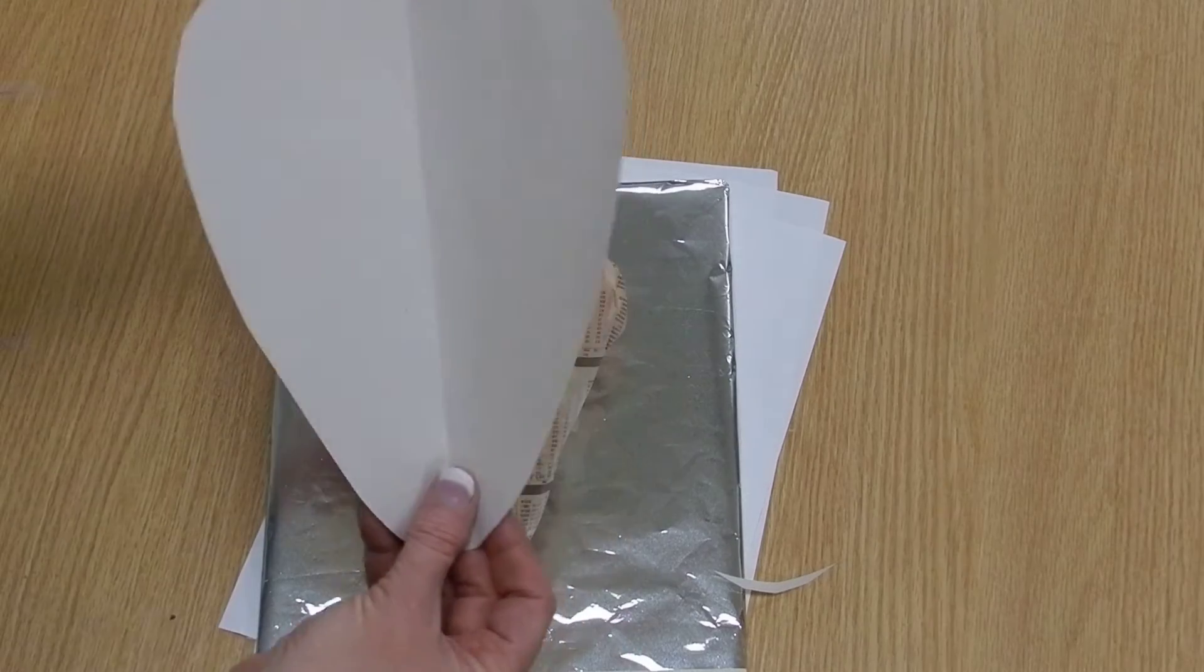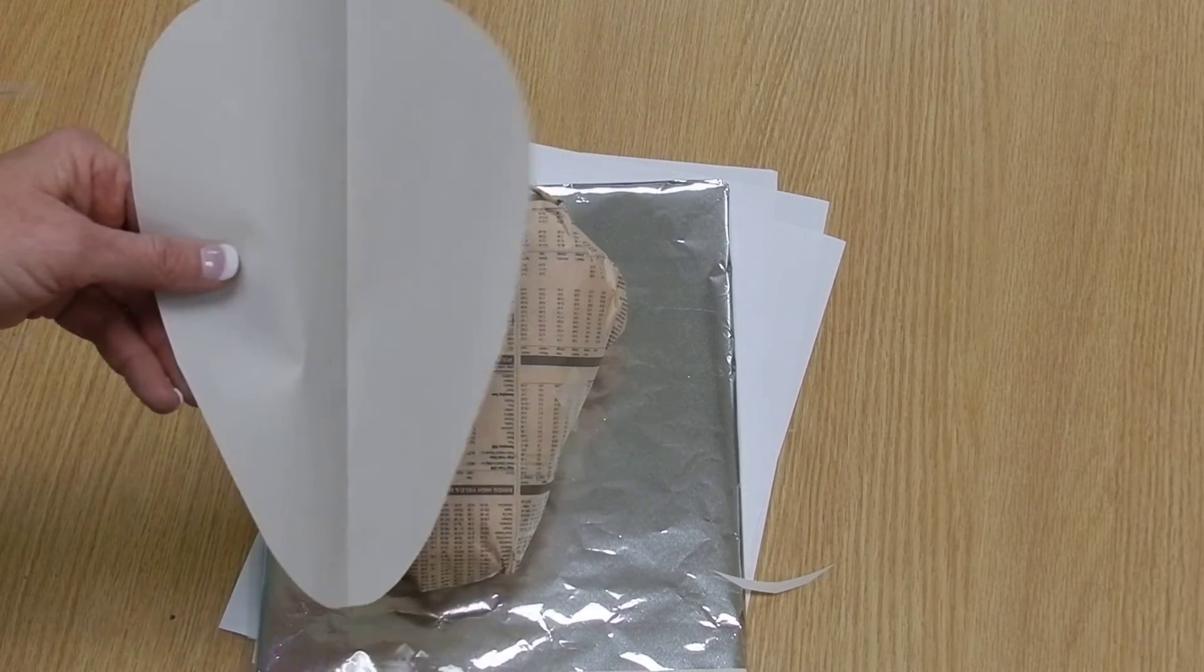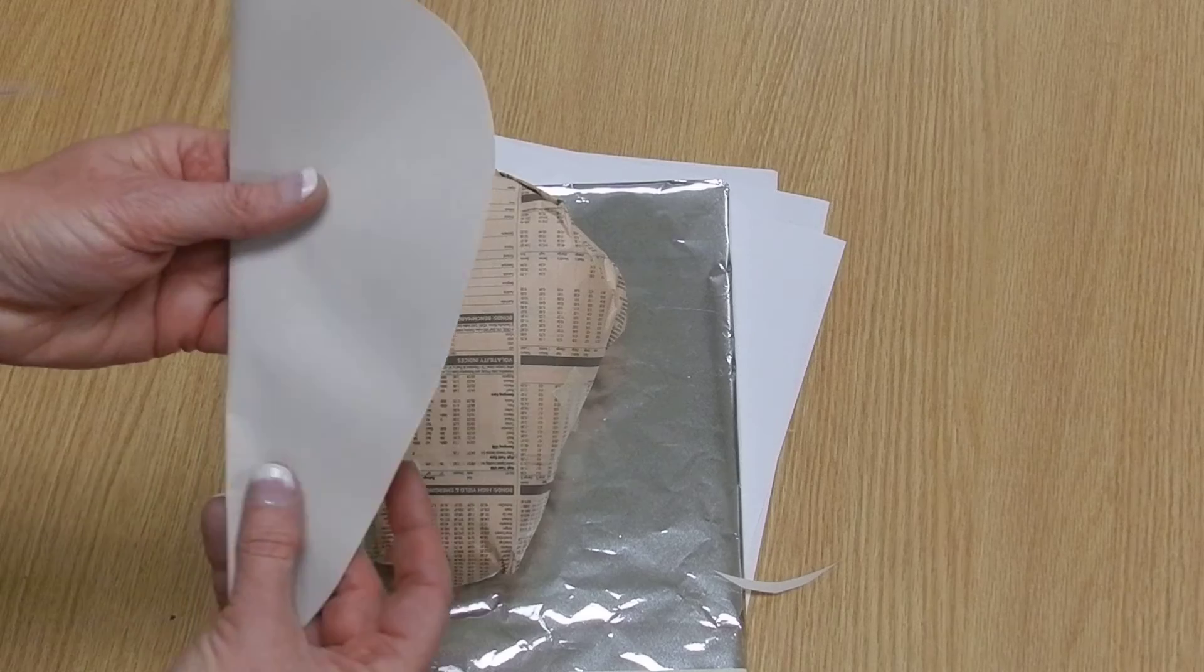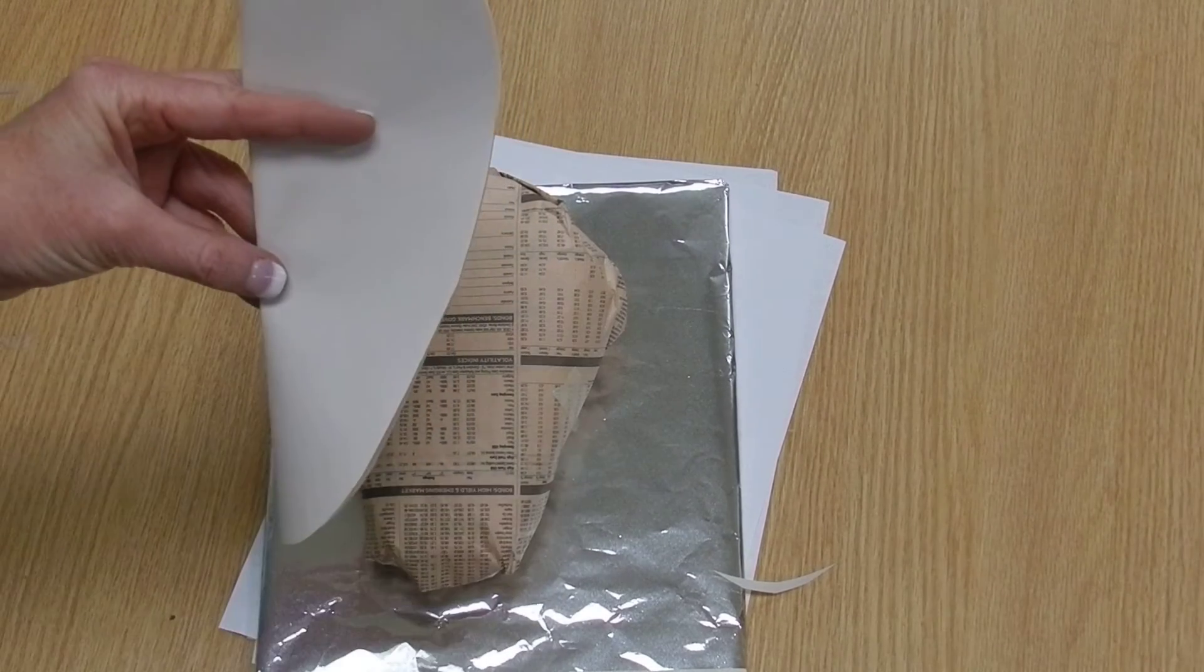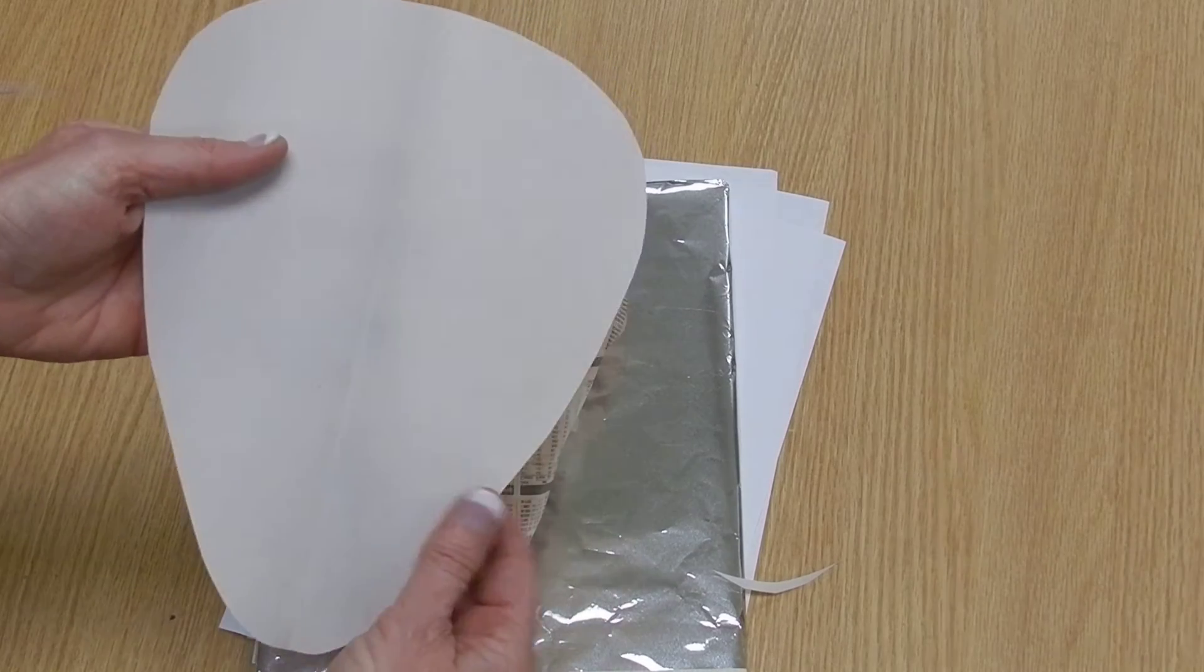So this step involved taking newsprint, folding it in half, using a pair of scissors to cut out the outline of the face shape itself.